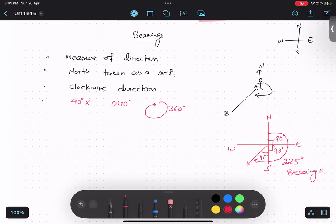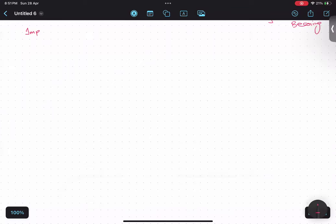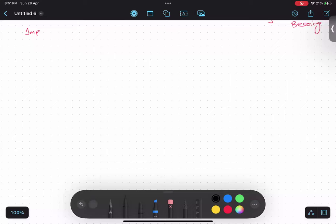Giving you one minute to copy this in your notebook. Some important things you should understand: suppose this is point A and the person is going towards point B. Always remember that at every point there is a north. So this is a north for A, and this is a north for B.